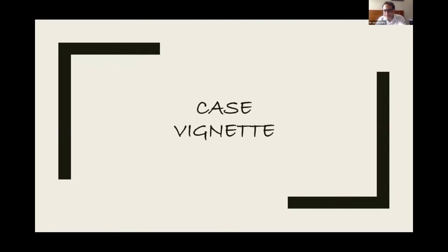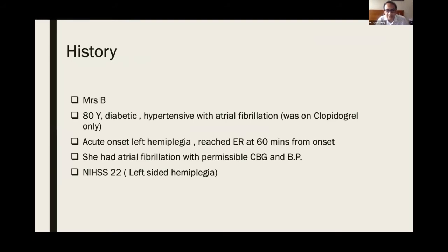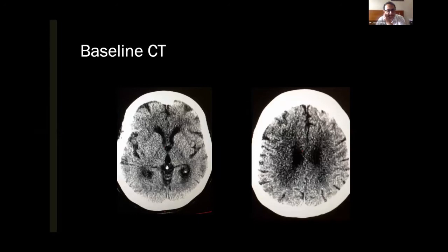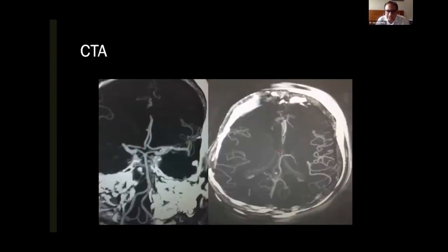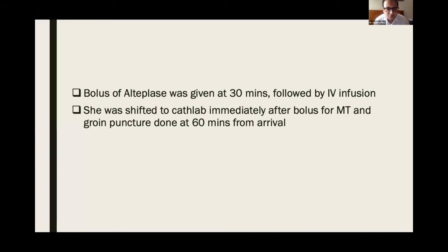Let me start with a case. This is an 80-year-old lady, diabetic, hypertensive, with atrial fibrillation, but was only on clopidogrel — the reason best known to her cardiologist only. She came with left hemiplegia and reached hospital within one hour of onset. She had atrial fibrillation on the monitor with permissible blood glucose and blood pressure. NIH score was 22. Baseline CT scan was good and showed an M1 occlusion. So the stage was set — bolus was given within 30 minutes of arrival, followed by infusion, and we immediately moved her to the lab for mechanical thrombectomy. Groin puncture was done within 60 minutes of arrival.